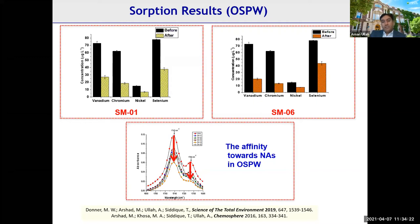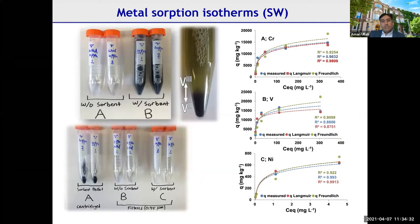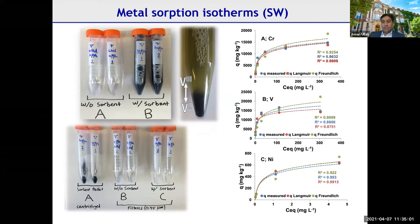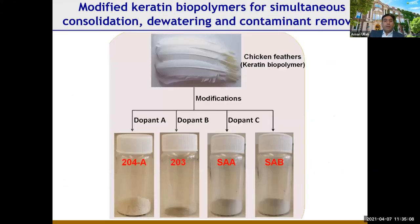We also removed naphthenic acids by 60–80%. Removing both naphthenic acids and metals from the recycled oil sands process-affected water makes it more efficient and reduces the need for fresh water. Additionally, the material not only removes metals but converts some to less toxic forms — for example, vanadium from oxidation state 3 to 2. Absorption capacity reached up to 17 mg of metal per gram of material, meaning small amounts can treat large volumes since metal concentrations are very low.